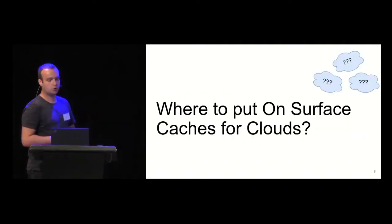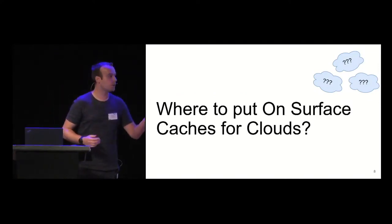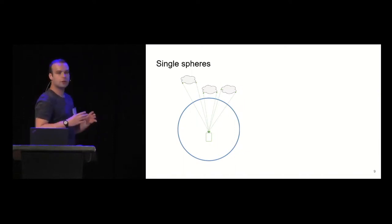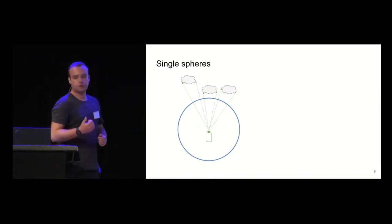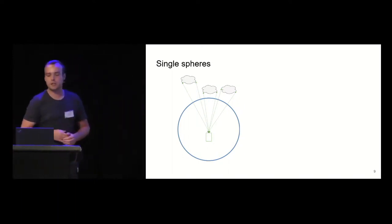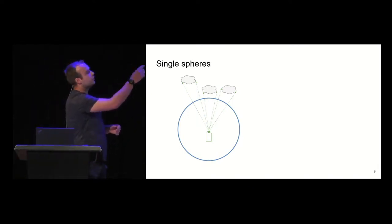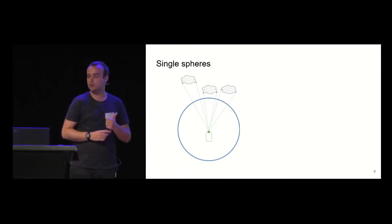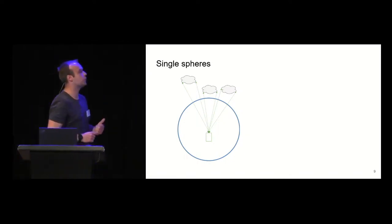However, now comes the elephant in the room: where do we put on-surface caches on for clouds? Because usually clouds don't have geometry. Especially for the ray-marching approaches, you don't have any geometry at all. What we can do is the most simple approach: just place a sphere around the scene, very similar to a skybox. In the first step, you determine which texels of your sphere are visible by the viewer. This is handled by on-surface caches. Then you have a separate update stage where you have all the texels which are required in a work queue. From this work queue, you compute back your origin and then do your ray-marching into the clouds.